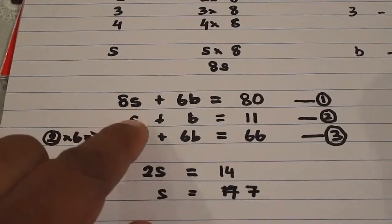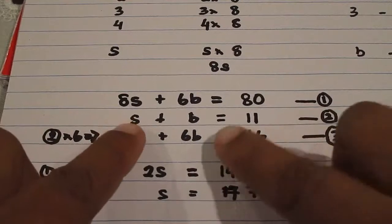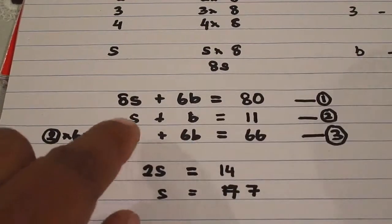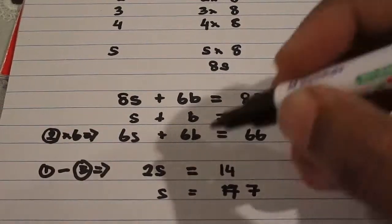Now how do we find what the number of bugs is? We look at our equations. Either we can substitute it in one of these equations, it will give us what bugs is, or we remember that looking at the second equation, our total number of heads is 11. So I use equation number 2.